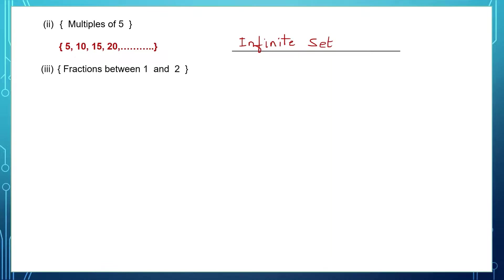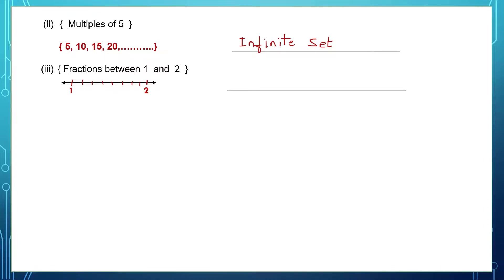Next one: fractions between 1 and 2. Let's draw a number line with whole numbers 1 and 2. Between 1 and 2, we can have any number of fractions. That means question 3 — fractions between 1 and 2 — will be an infinite set.